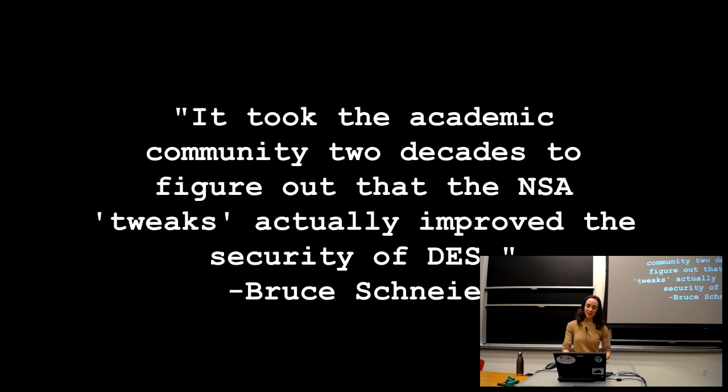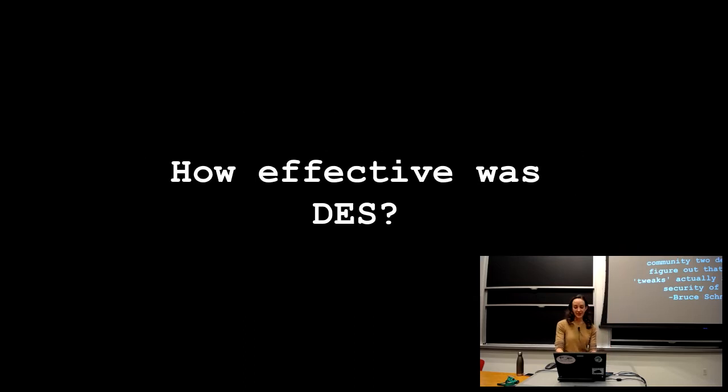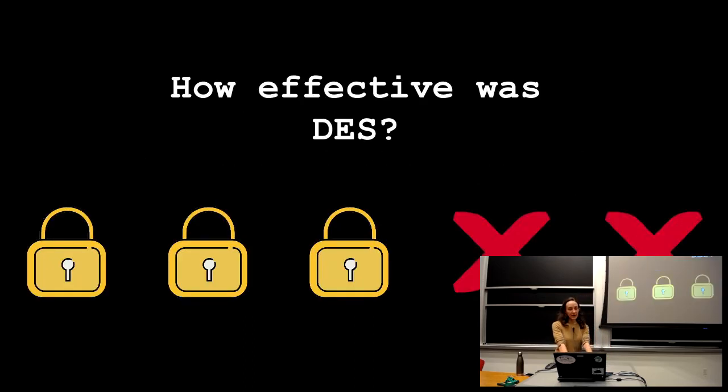In this case, it turns out that the NSA actually had improved the structure of the S-boxes. So 20 years of crypto analytics later, they figured out that the modifications that the NSA made actually made it more secure than the initial setting. So this is a quote from Bruce Schneier. It took the academic community two decades to figure out that the NSA tweaks actually did improve the security of DES. So it turns out that that piece of it wasn't sketchy. But that doesn't mean that there were sketchy things going on here. So how effective was DES? I'm going to give it three out of five locks here, mainly because the key size isn't long enough to be secure. That's really its main shortcoming.